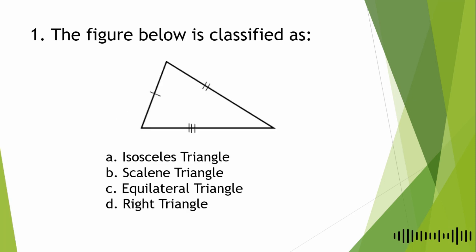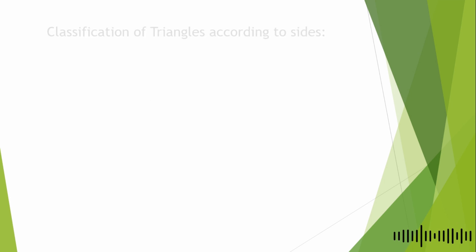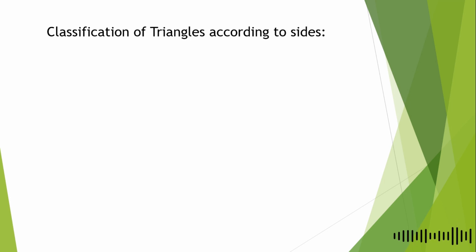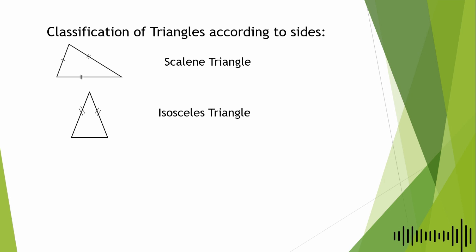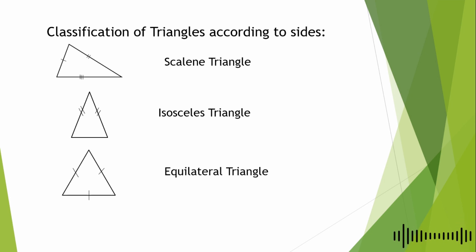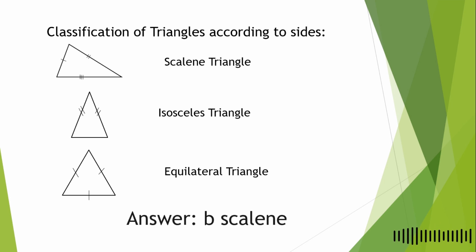For the first question, the figure below is classified as: A. Isosceles Triangle, B. Scalene Triangle, C. Equilateral Triangle, and D. Right Triangle. Classification of triangles according to sides: Scalene Triangle has no congruent sides; Isosceles Triangle has two congruent sides; and Equilateral Triangle has all sides congruent. So according to this classification, the answer is B.